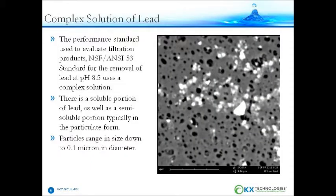A good example of a complex solution of heavy metal is the drinking water standard NSF ANSI 53 for lead removal at pH 8.5. When testing to this standard, the solution has both soluble lead and particulate lead. The size of the particulate lead ranges, but can have particulates as small as 0.1 micron.